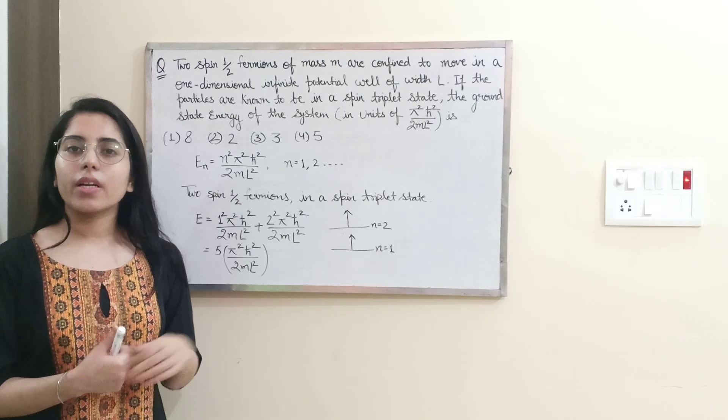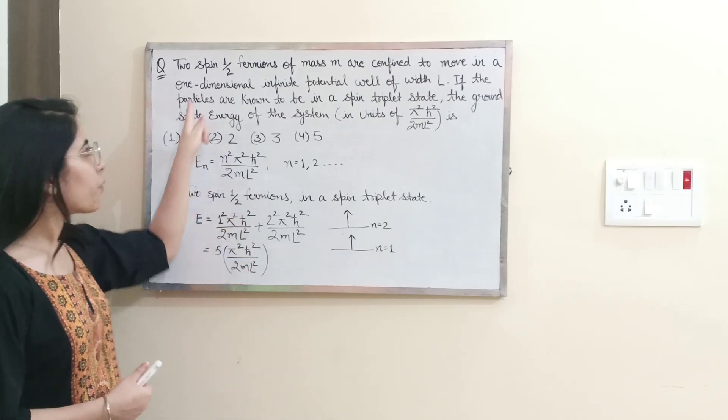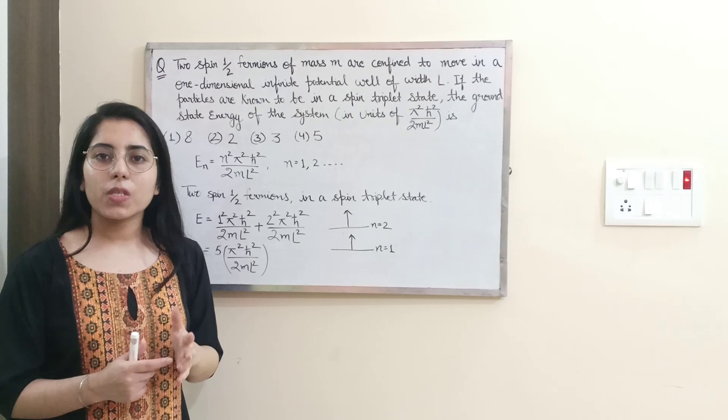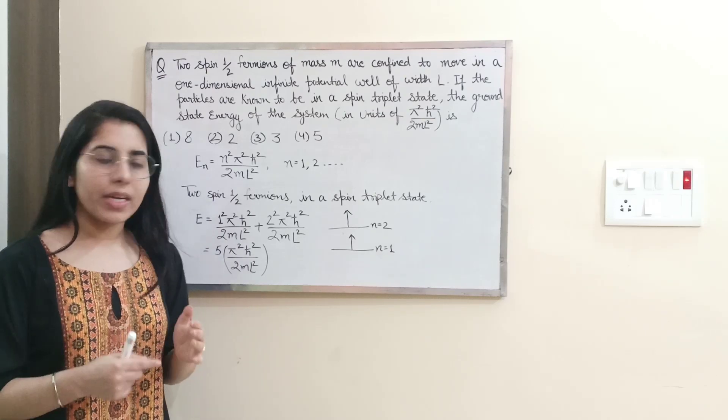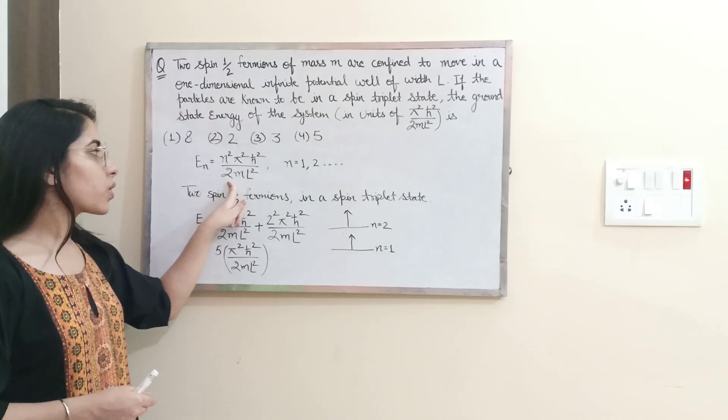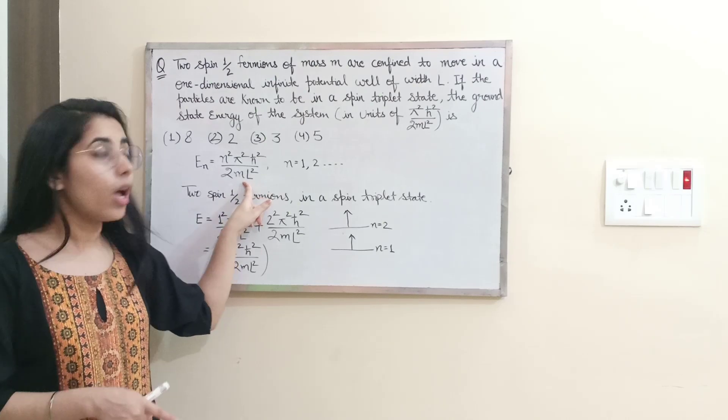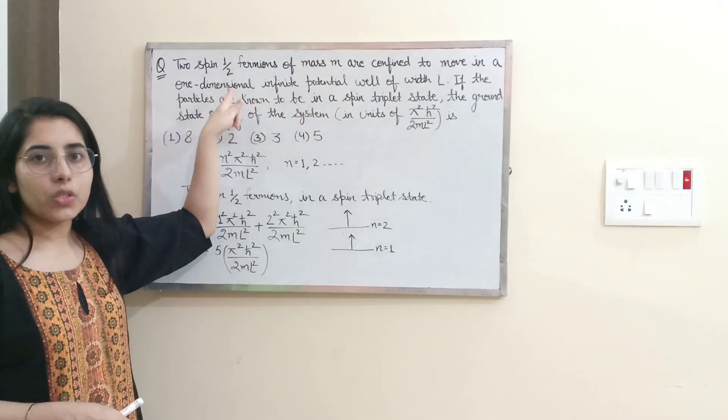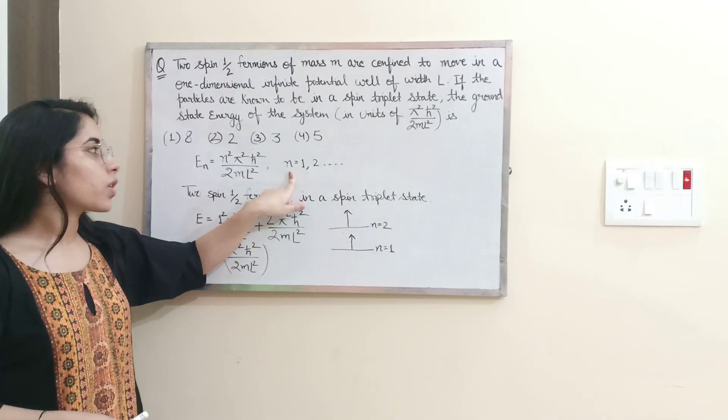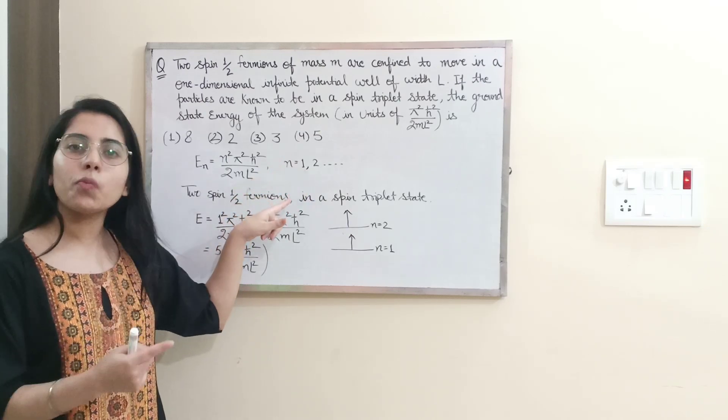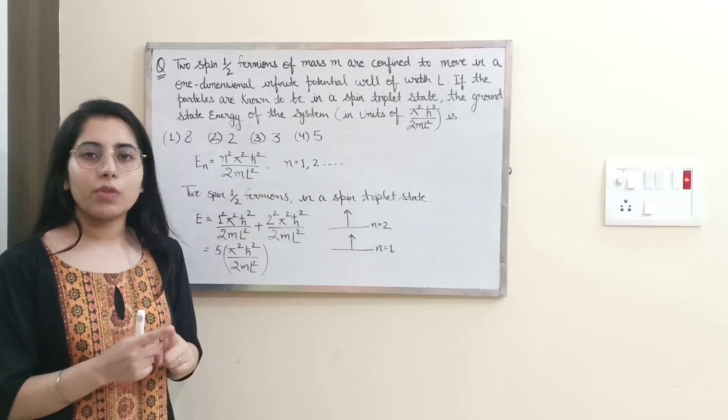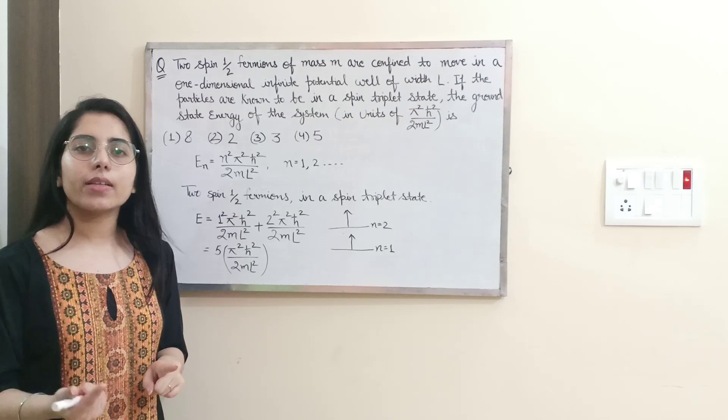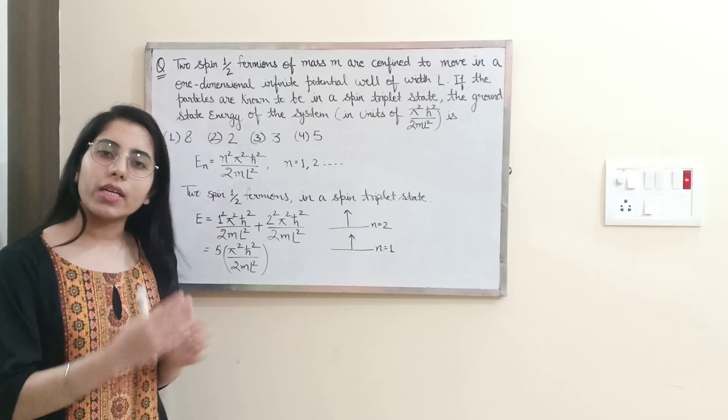When we have studied about the system that is one dimensional infinite potential well, for this system the energy expression is for nth state it is n² π² ℏ² upon 2ml². For this particular system, n values can be from 1. For ground state n will be equal to 1, for first excited state n will be equal to 2, and so on.